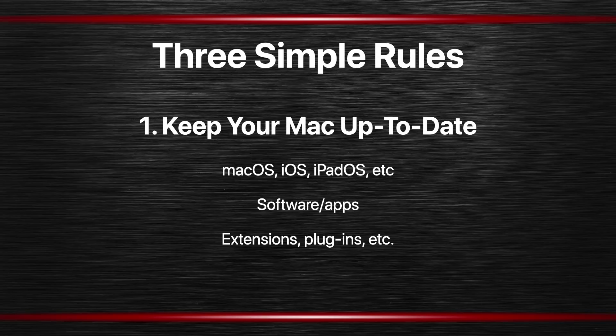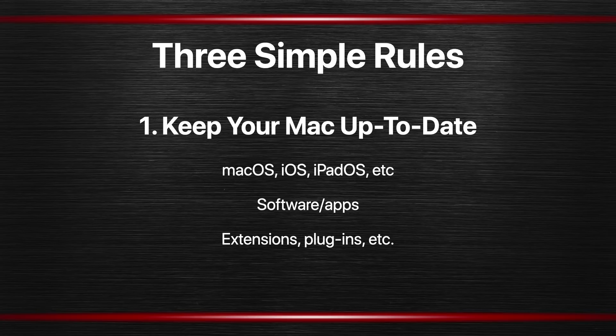The first rule is keep your Mac up to date. This should be a fairly simple one. Mac OS Auto Updates — just make sure that's turned on. Make sure that you are using the latest version of Mac OS that your Mac allows. If you have an older Mac you may not be able to use the absolute latest one, but keep it as up to date as possible. In addition to major updates like Mojave, Catalina, and all the way up to Monterey, you also have minor updates — things like 11.1, 11.2 — and even smaller security updates. Make sure you have all that turned on for the latest operating system, and that's true for all your Apple devices.